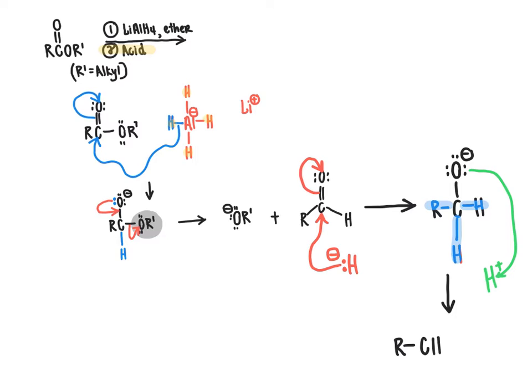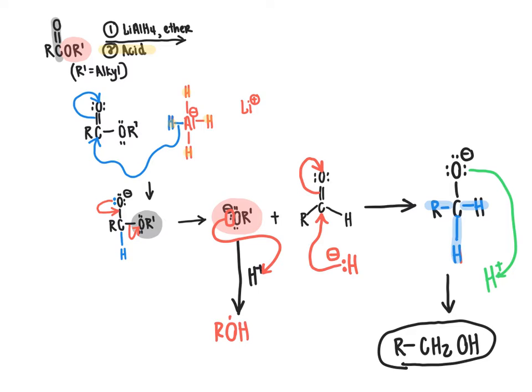What we're going to see here is that if we start with an ester starting material, our final product is going to correspond to the addition of two hydrogen atoms to the carbonyl group and the loss of that O-alkyl group. That O-alkyl group will no longer be there. Eventually it will pick up a proton to be converted into an alcohol product, but this is generally not the alcohol we're interested in. When we're thinking about the final product we actually want, it's the one derived from the carbonyl and that R group directly bonded to it.